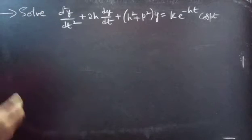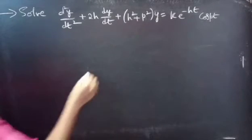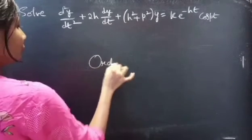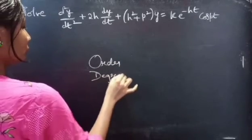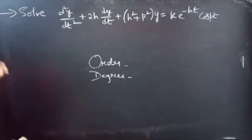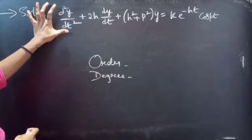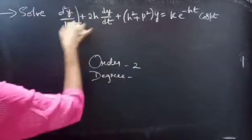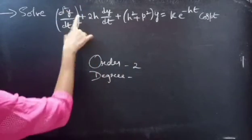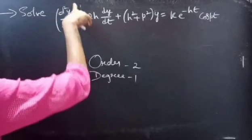Now let's find the order and degree of the given differential equation. Here d²y/dt² is the highest derivative, so the order will be 2. The highest power of the highest derivative is the degree, so the degree is 1.